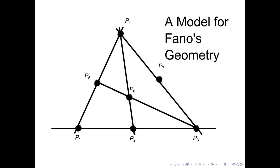Continuing the same line of argument: P6 and P7 currently don't have a line containing both of them, and for Fano's axioms to hold, there must be one. This line must intersect all other lines. It intersects the line containing P3, P7, P4; the line P3, P6, P5; and the line P2, P6, P4. The only other point available that makes it intersect the bottom line and the left line is P1, so we draw a line containing P6, P7, and P1.